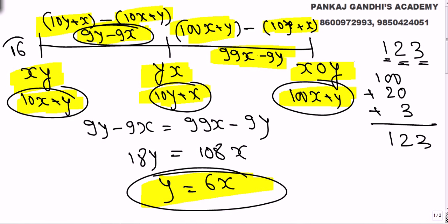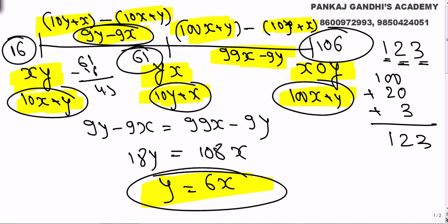So now simply what it works out is originally he saw sixteen. Then he saw sixty one and then he saw one zero six. So in one hour he went sixty one minus sixteen that is forty five. So speed of the vehicle is forty five kilometers per hour.